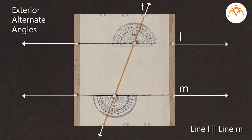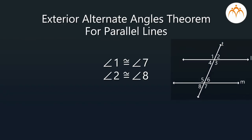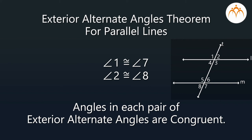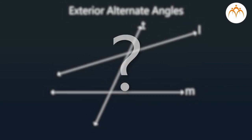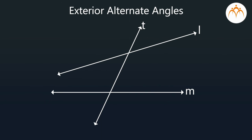Now, we can say that when a transversal cuts two parallel lines, we get two pairs of exterior alternate angles such that in each pair the measures of the angles are equal. Or in other words, each pair of exterior alternate angles is of congruent angles. Then what is the relationship between the angles in each pair of exterior alternate angles when they are formed by two intersecting lines and a transversal? Let us see.